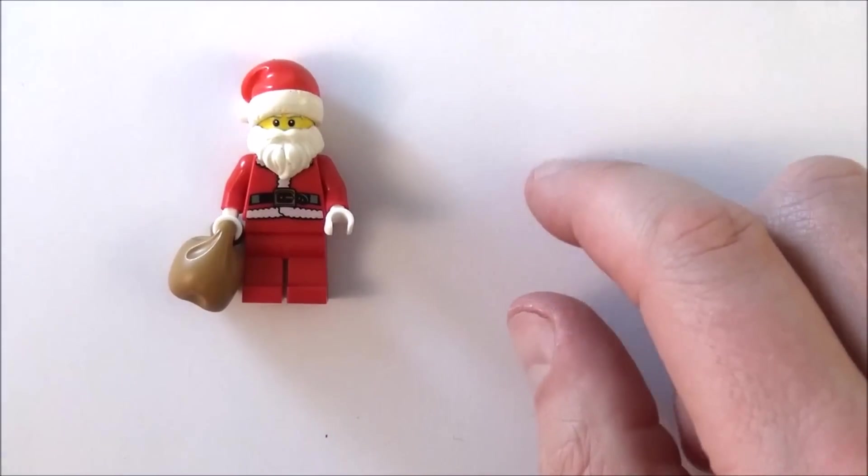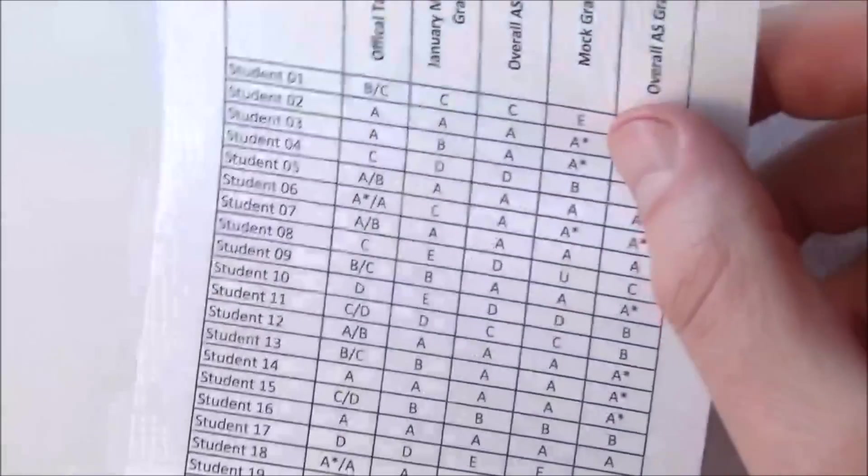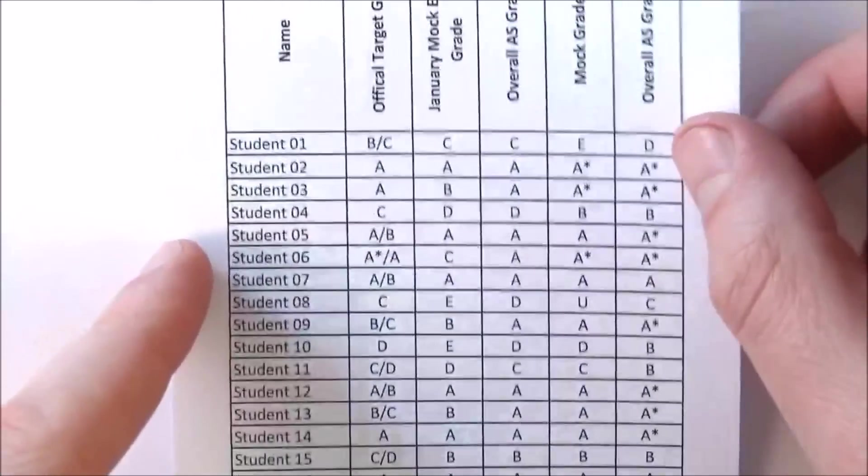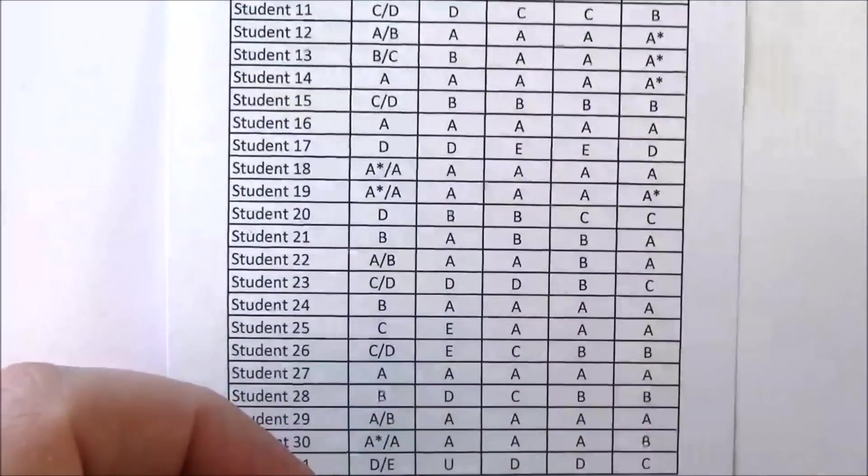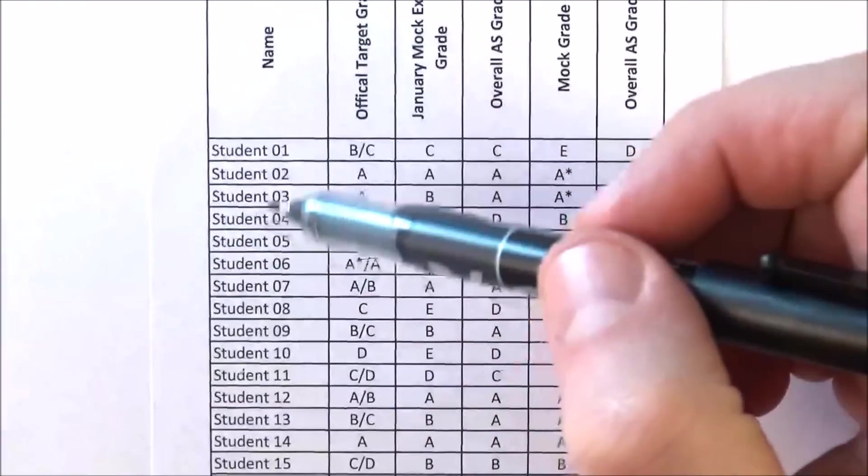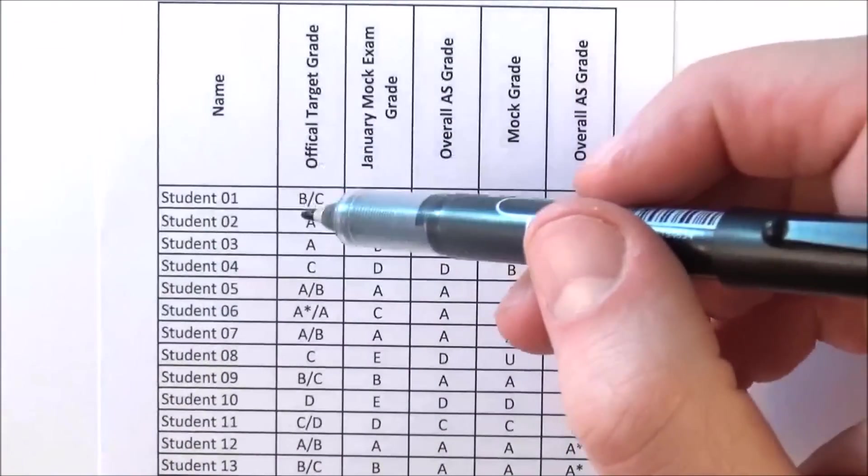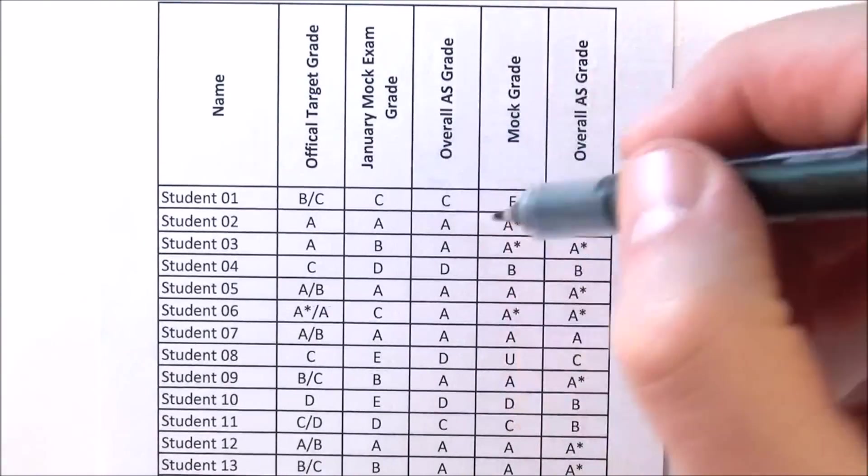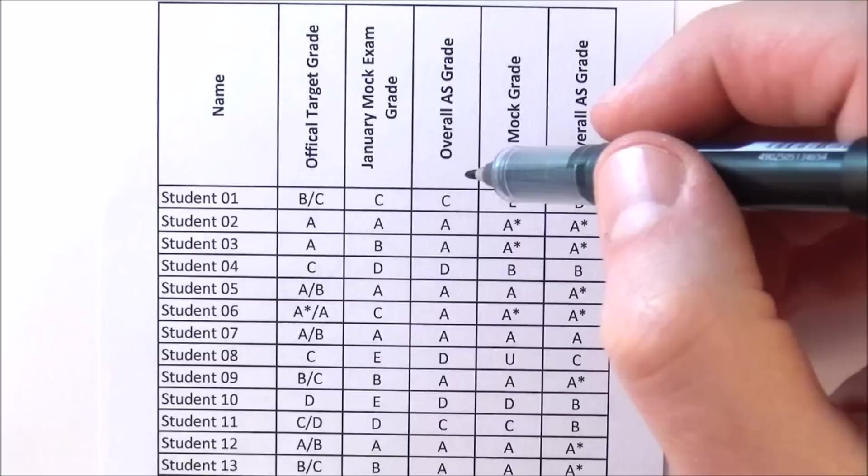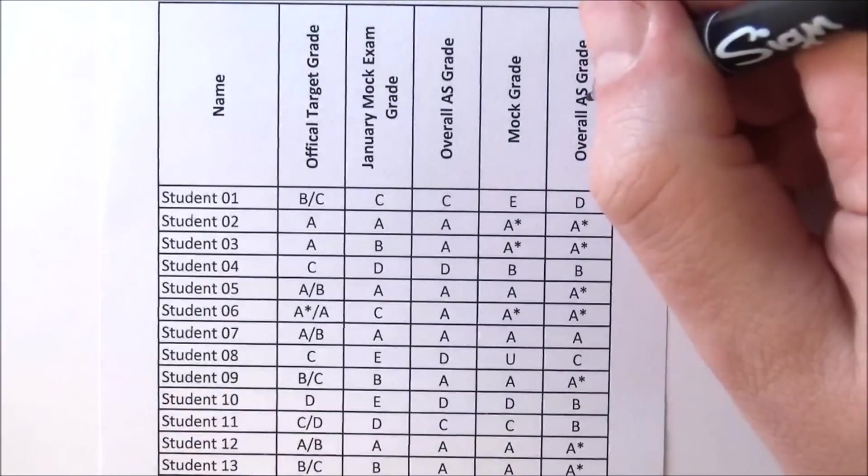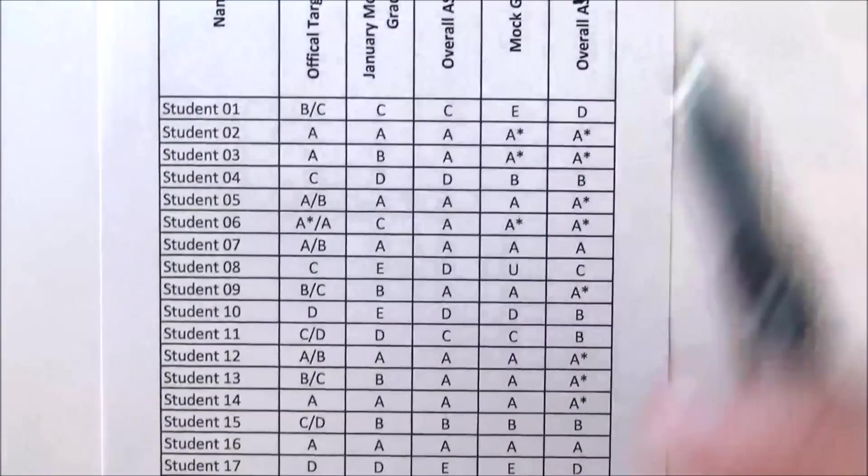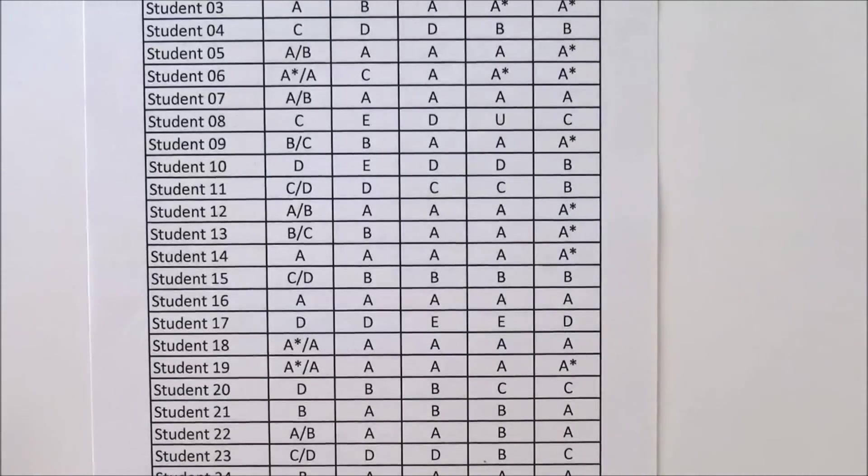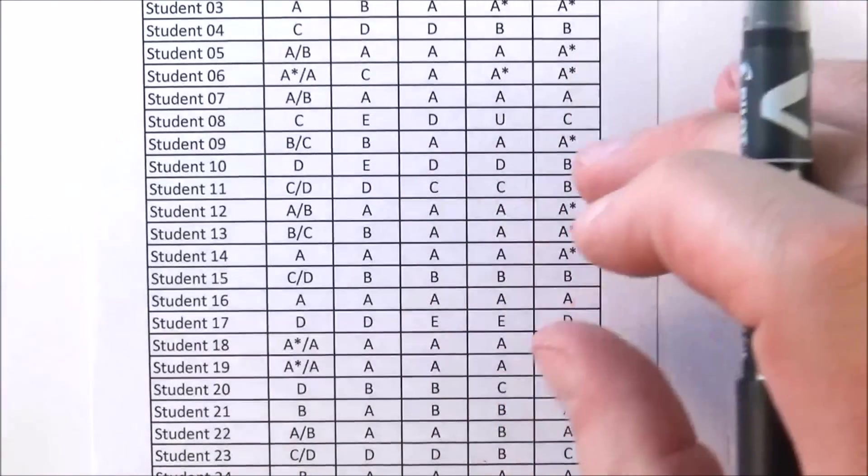And I've got some data here because I'm a teacher, especially a physics teacher. We quite like looking at numbers, and this is some real data from my class I taught when I was a head of physics. What I've got basically here, I've got their students—I didn't put their real names in—I've got their official target grade and what they got in the January mock exams, their overall AS grade, and then their mock exams that they did in year 13, and their overall A2 grade. So at the moment this is just basically a load of numbers and it doesn't really give you a lot of information.